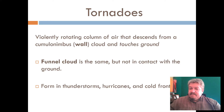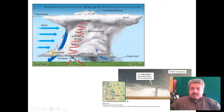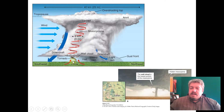Tornadoes normally form in thunderstorms. They can also form in hurricanes because hurricanes can have very strong thunderstorms as well. These strong multi-cell thunderstorms have mesocyclone rotations. Sometimes the rotation is so strong that it starts to come down and forms the funnel cloud, and once that funnel cloud hits the ground, it's a tornado. Here you can see the tornado coming down — this was taken in Colorado.